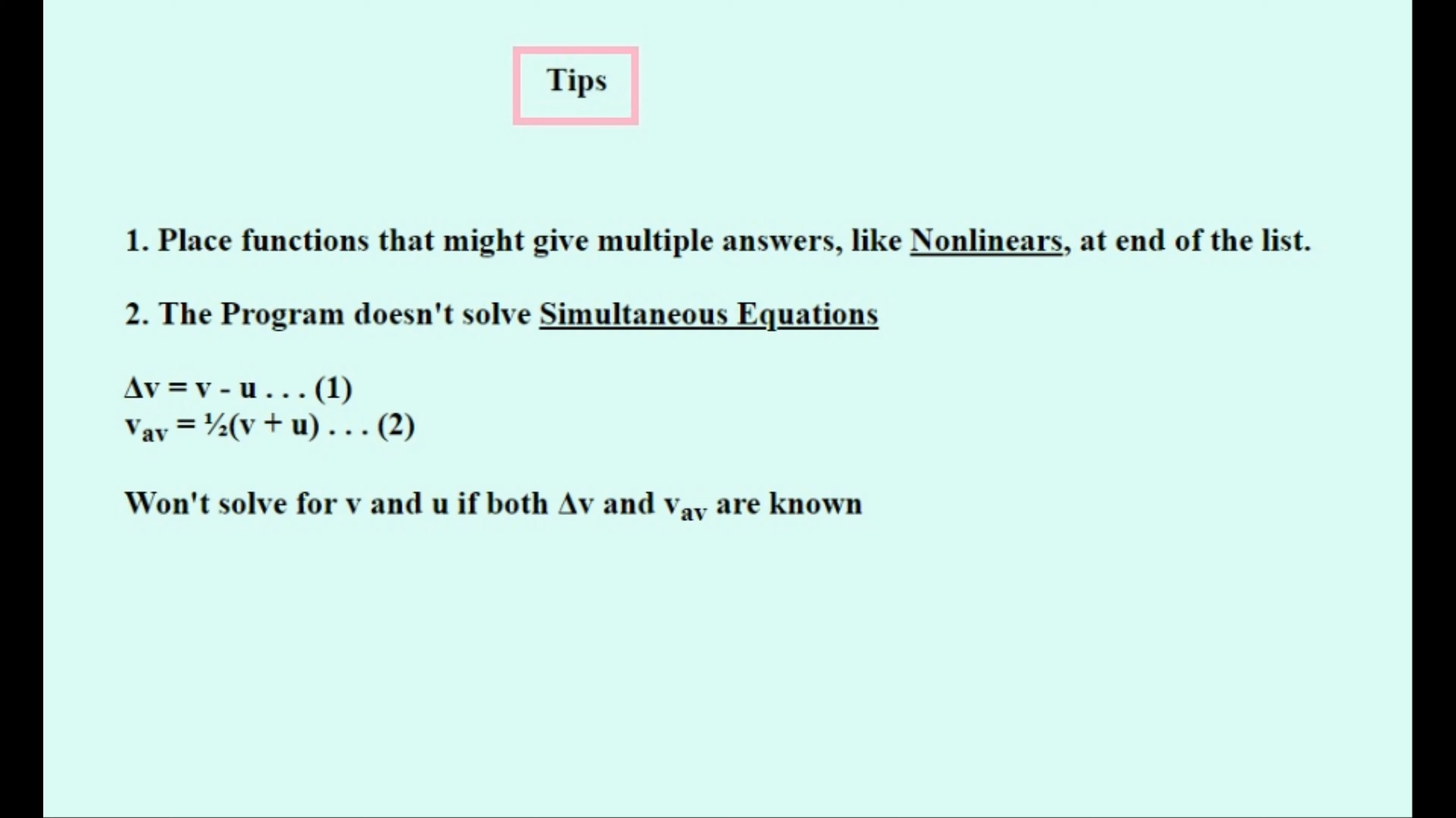It should in theory be able to solve both V and U for these equations if delta V and Vav are known. But it won't in this program because neither of these equations will have only one unsolved variable in this case. So an extra equation like this one needs to be added so as to solve for U and V in this case. So I hope that this video has been helpful for you.